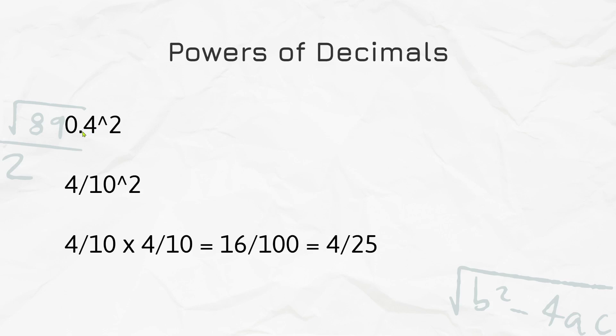So we know that 4 is in the tenths place, so it's equal to 4 over 10. So now we do 4 over 10 to the power of 2, which is 4 over 10 times 4 over 10, which is 16 one hundredths, and we can simplify it down to 4 twenty-fifths.